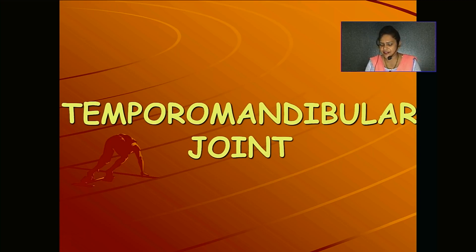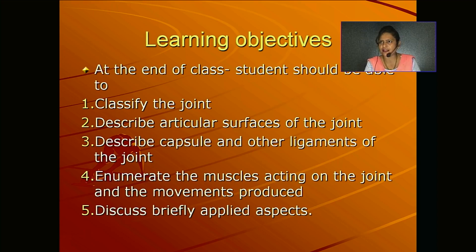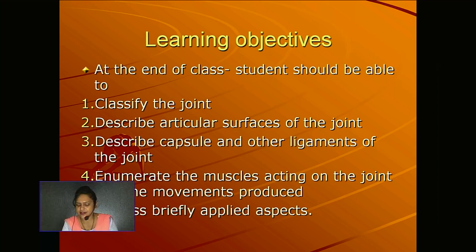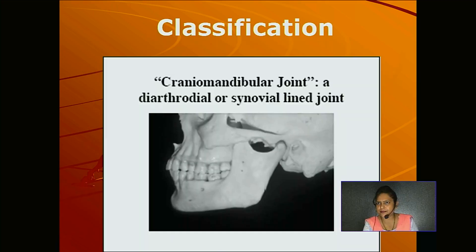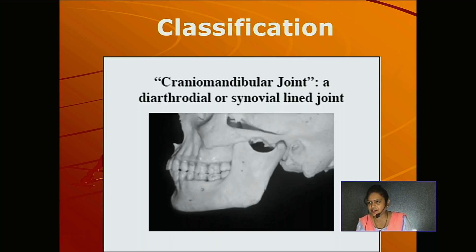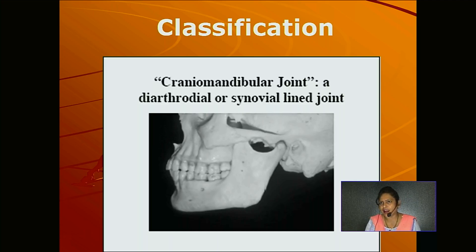Good morning everyone. Today we study the temporomandibular joint. These are the learning objectives. The temporomandibular joint is a synovial type of condylar variety. There are different classifications of the joint — one is the synovial type of condylar variety. It is also known as the cranio-mandibular joint, diarthrodial, or synovial lined joint.